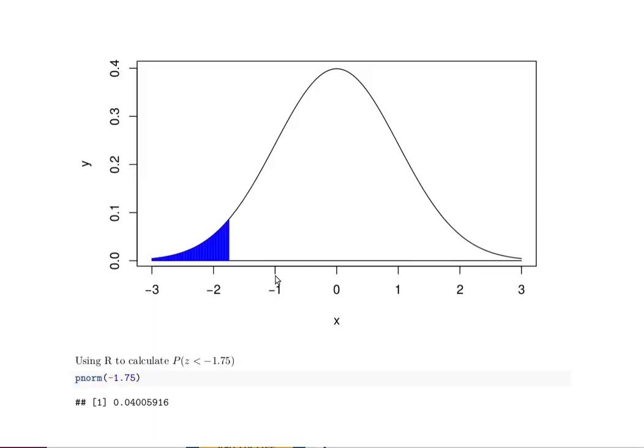R has a built-in function that does that. The pnorm of any particular value tells the probability of getting that value or less in a standard normal probability distribution.